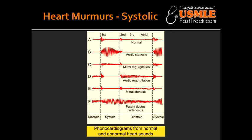Describe the area where tricuspid regurgitation is heard the best. Tricuspid regurgitation is loudest at the tricuspid area and it radiates towards the right sternal border. It is enhanced by maneuvers that increase right atrial return, such as inspiration.